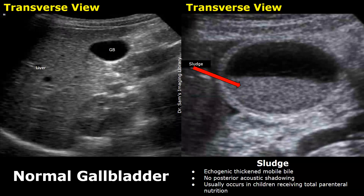This is a transverse view showing gallbladder sludge. We can see echogenic thickened bile with no posterior shadowing.